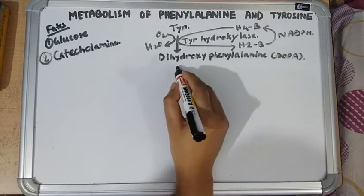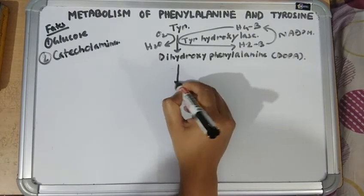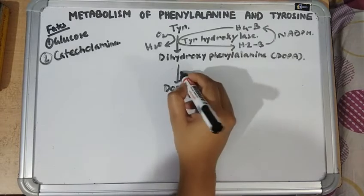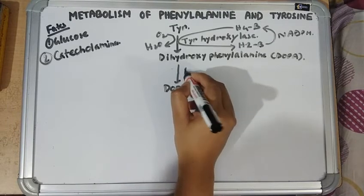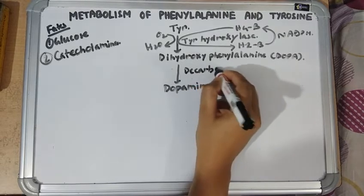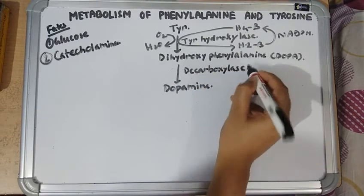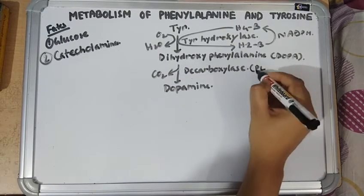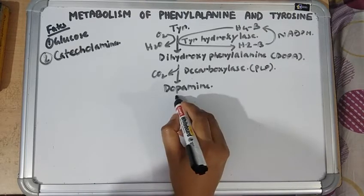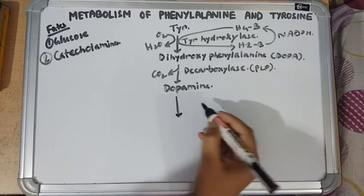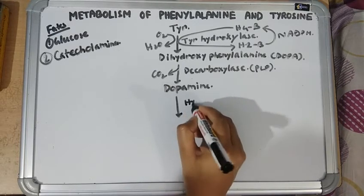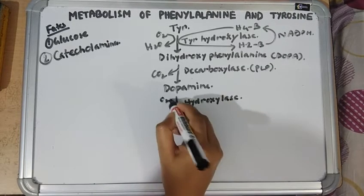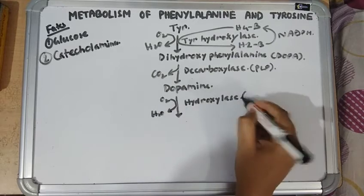DOPA, or dihydroxyphenylalanine, is converted into dopamine, which is the first catecholamine, by dopa decarboxylase. There is decarboxylation and PLP is required as the coenzyme. Dopamine then undergoes hydroxylation by dopamine beta-hydroxylase, requiring vitamin C, to form norepinephrine.